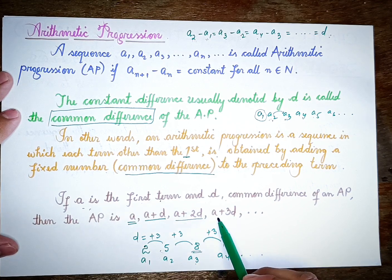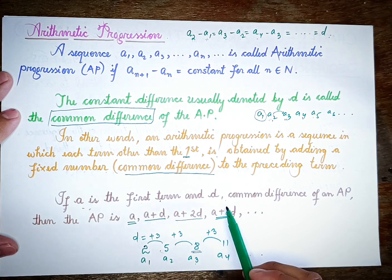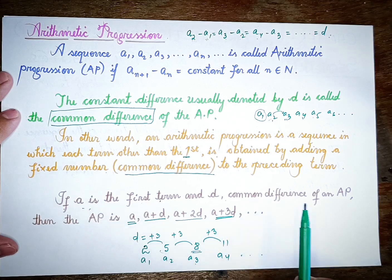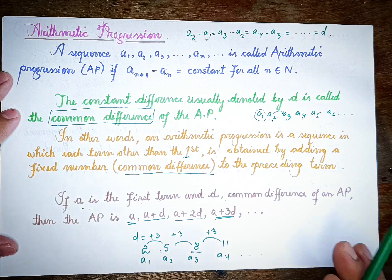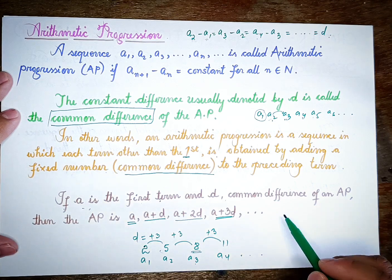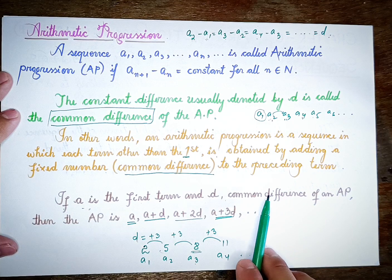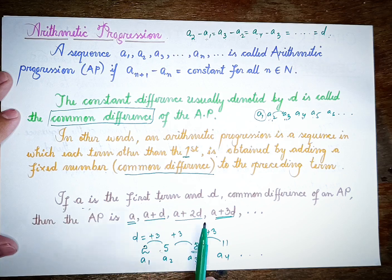For the fourth term, we add the common difference to the third term: a plus 2d plus d gives us a plus 3d. So the arithmetic progression is: a, a plus d, a plus 2d, a plus 3d, and so on.